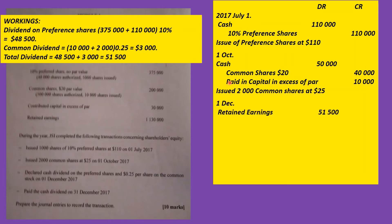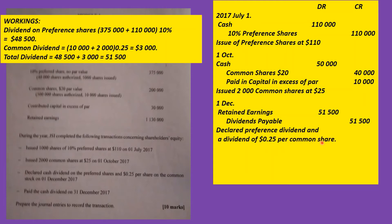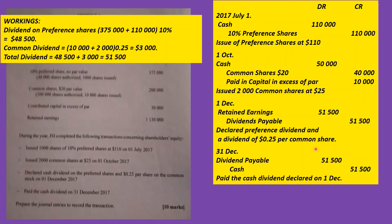On December 1st, we make the journal entry for the declaration: debit Retained Earnings $51,500 and credit Dividends Payable $51,500. We must make sure to use 'Dividends Payable' — not just 'Dividends' — to show it hasn't been paid yet and is in a liability account. Then on December 31, 2017, we record payment: debit Dividends Payable $51,500 and credit Cash $51,500 to record the cash dividend declared on December 1st.